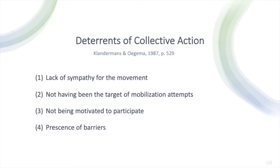Here we come back to a version of Olson's collective action problem. The following issues arise within groups and between members that ultimately rest on the interests of individuals within that group: lack of sympathy for the movement, not having been the target of mobilization attempts, not being motivated to participate, presence of barriers, or a combination of the four. Barriers can range from timing or location inconvenience to degree of potential backlash or risks depending on the type of demonstration. There are an infinite number of variables that can affect one's willingness to participate, but the more motivated an individual is, the more barriers they are likely to overcome.